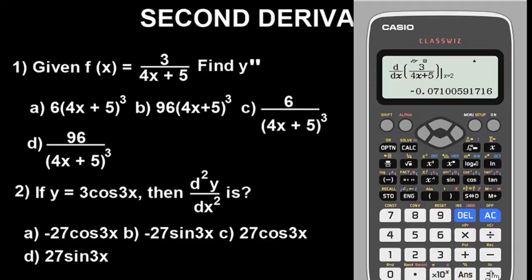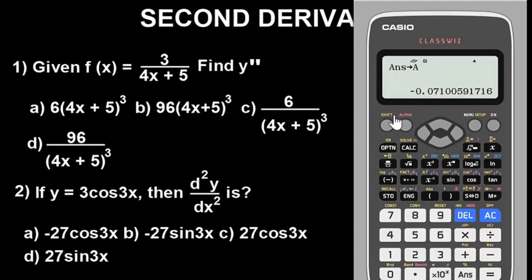Remember, I want to solve the second derivative, and this is the value for the first derivative. The next thing to do is store this number as an alphabet — I always use A. Store the value of the first derivative as A. To store it, just press Store then A. Don't press Shift first; just press Store and the alphabet. It now indicates that this value has been stored as A.